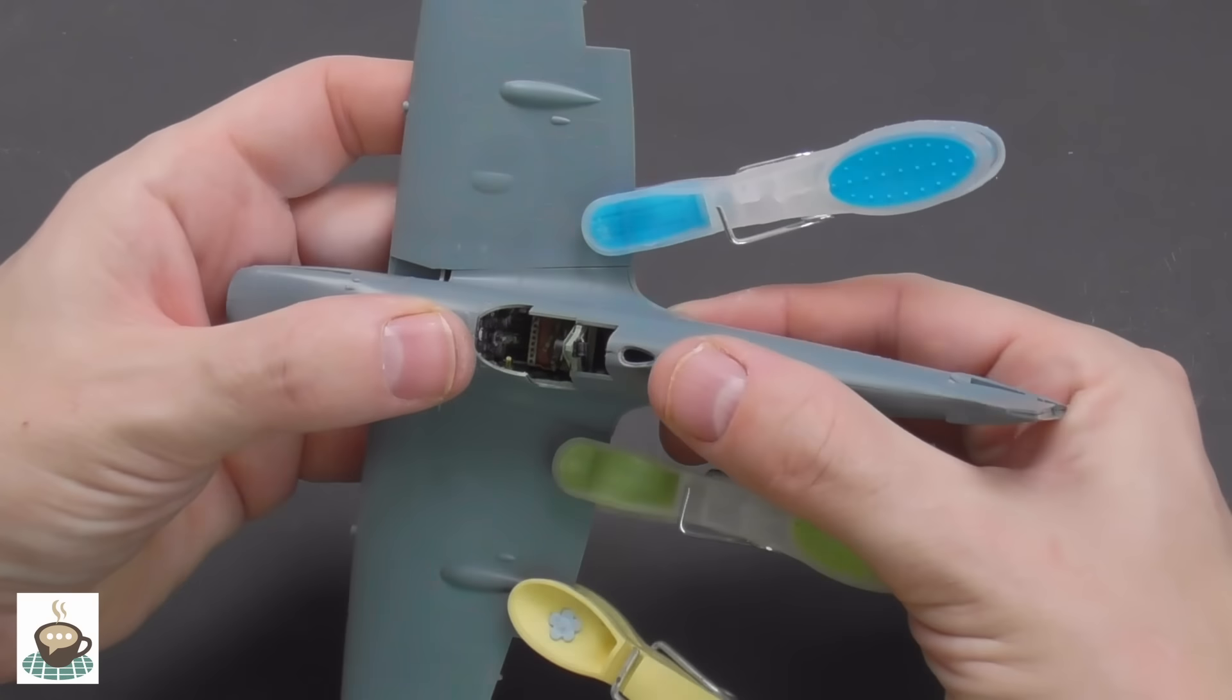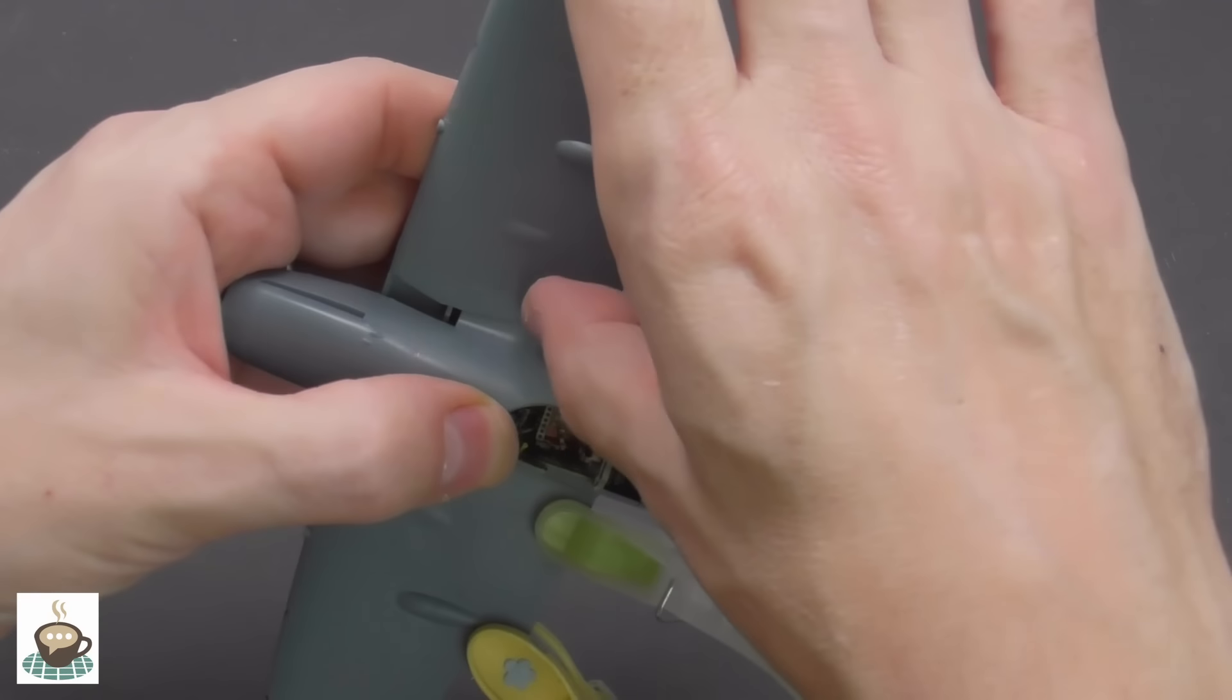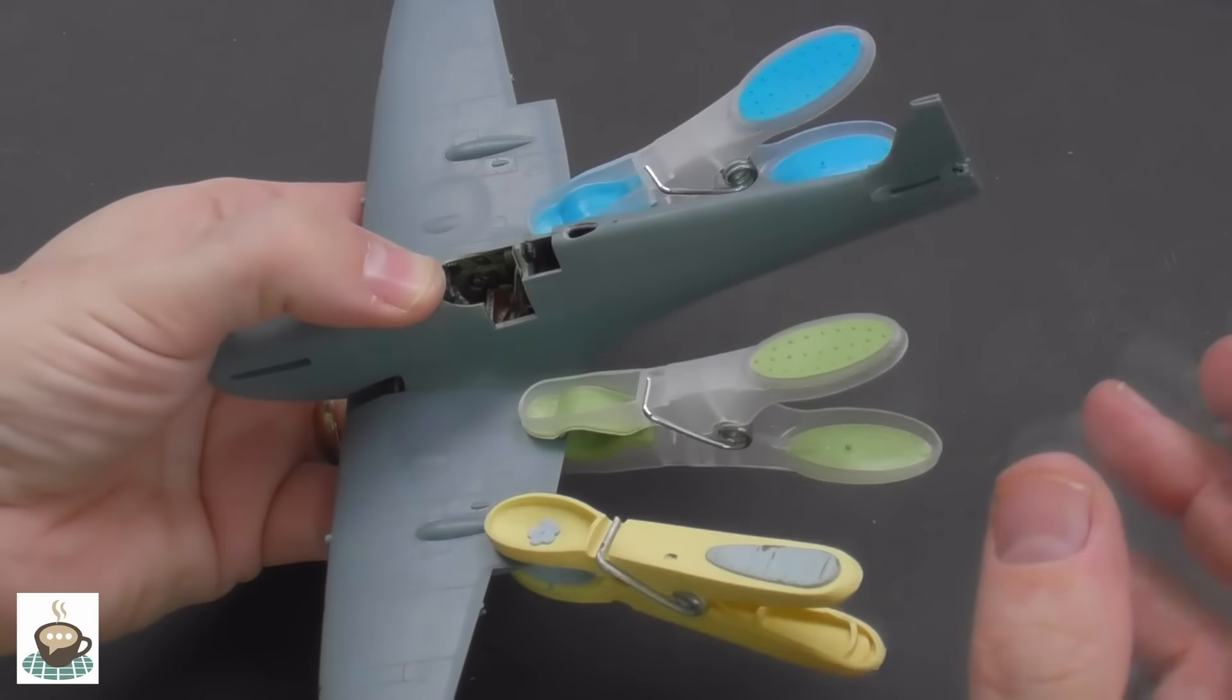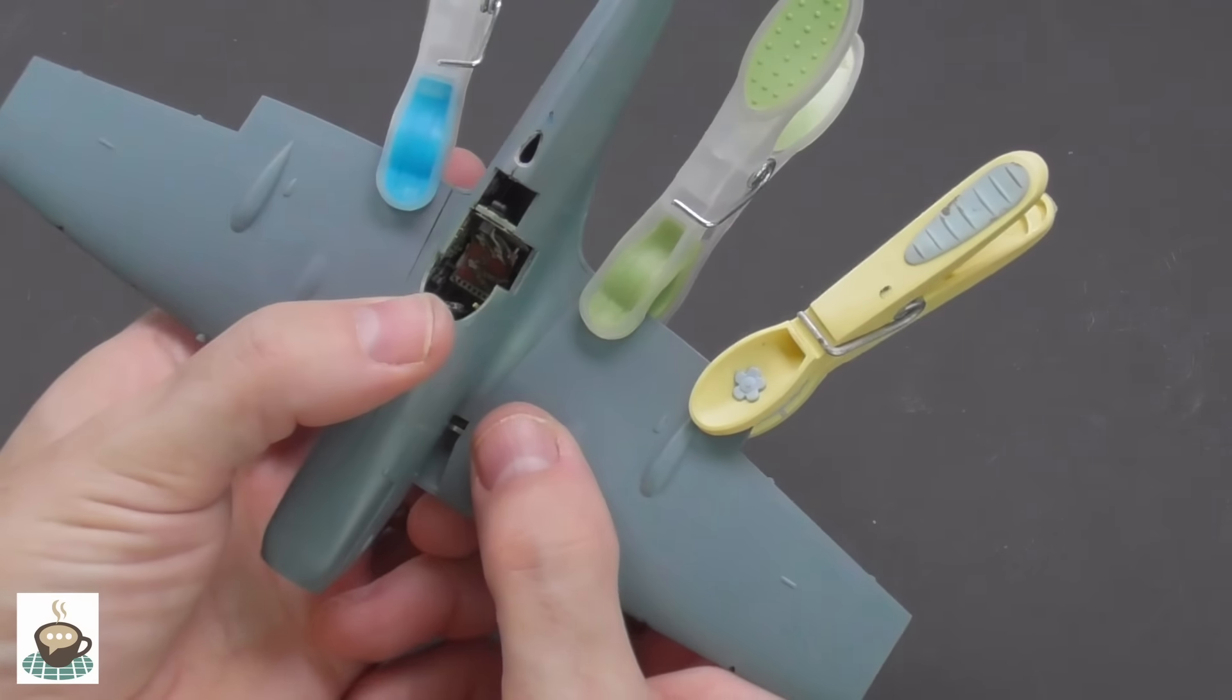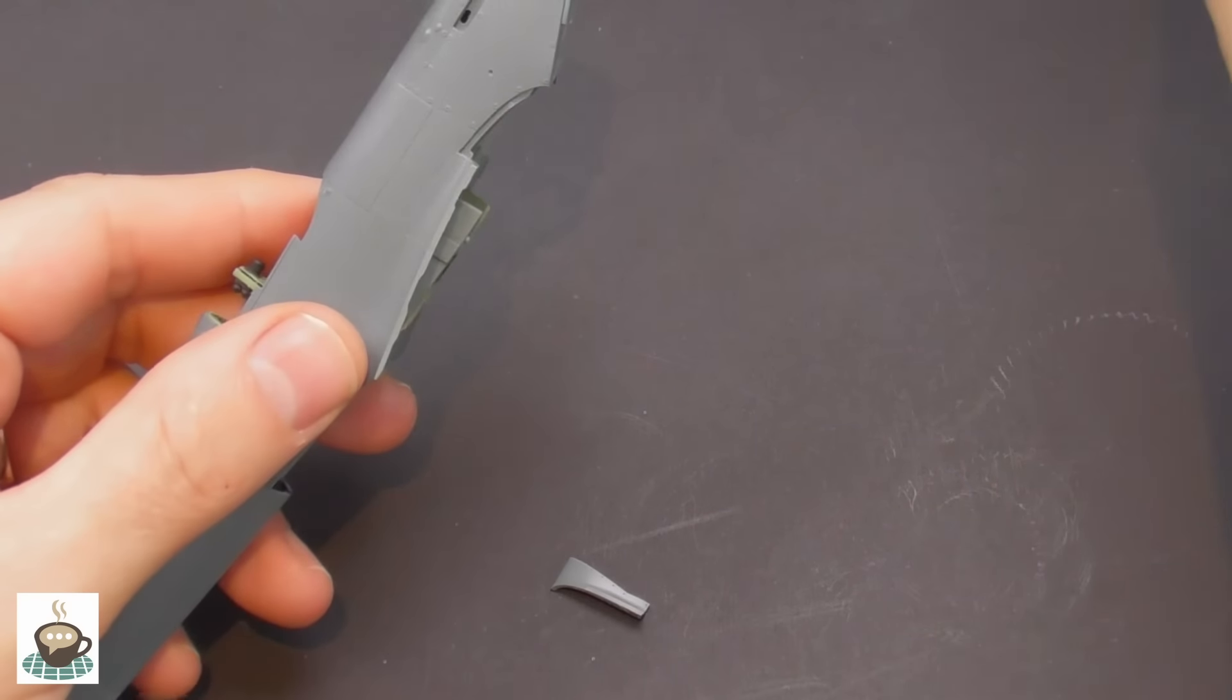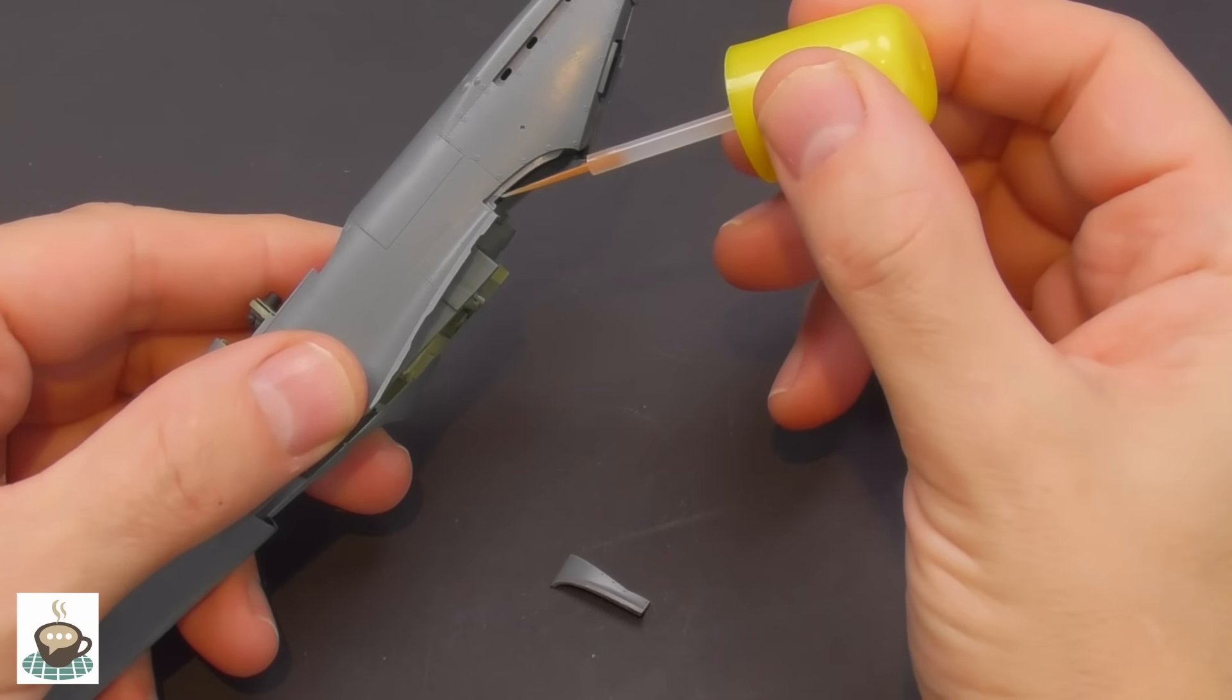I can't resist a dry fit at this stage. Starting to look like a Spitfire, but I'm just checking the wing root seam, checking for slight gaps and if there's any steps or anything like that.